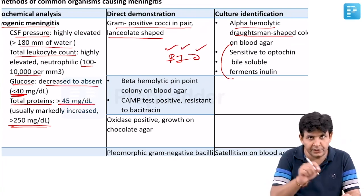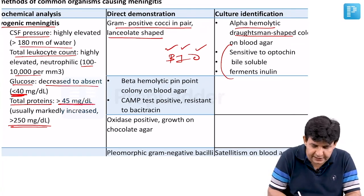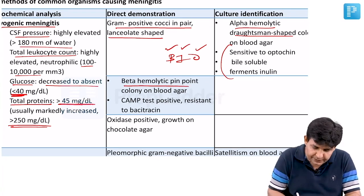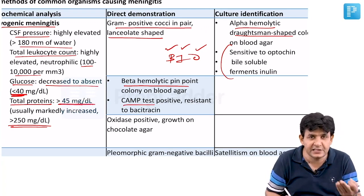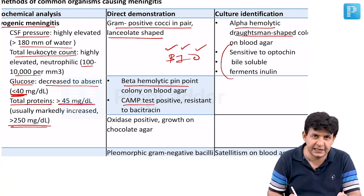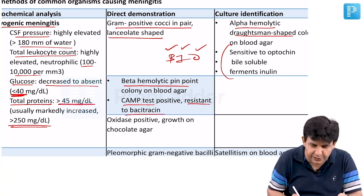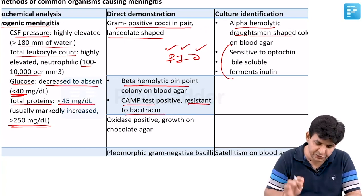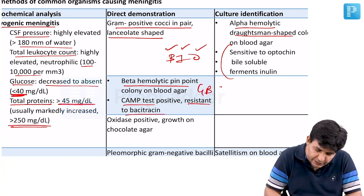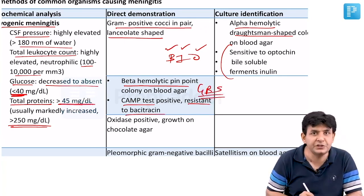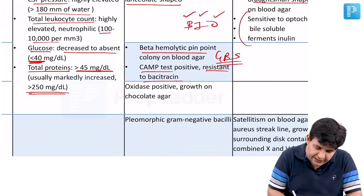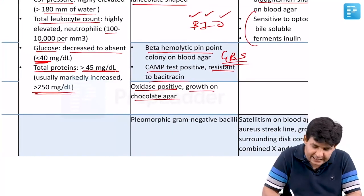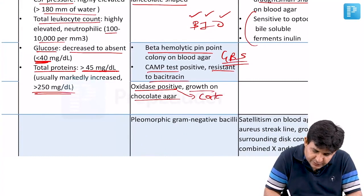Regarding GBS, it is beta-hemolytic and CAMP test positive. What is CAMP? Christie-Atkins-Munch-Petersen test. GBS is resistant to bacitracin antibiotic - that is an important differentiating feature.